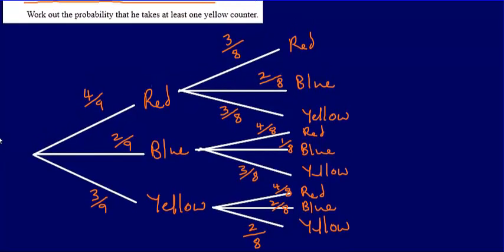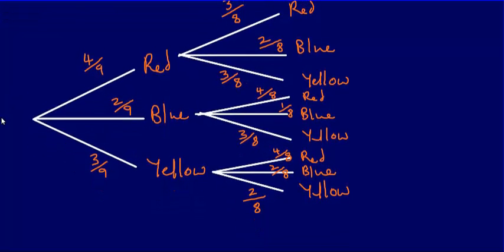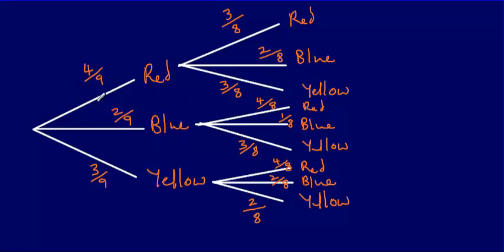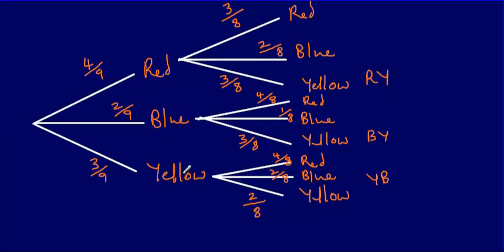We've drawn our tree diagram and written out the probabilities. We need to find scenarios where Pervinda chooses at least one yellow counter. The possible combinations are: red then yellow, blue then yellow, yellow then blue, and yellow then yellow — giving four combinations. Oh, and yellow then red as well, so there are actually five combinations resulting in at least one yellow counter.